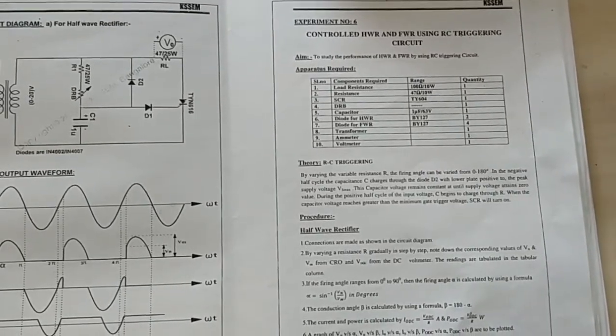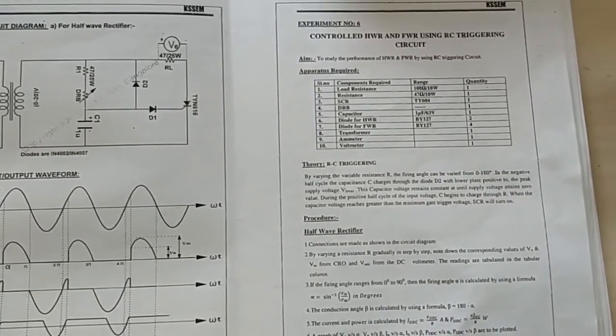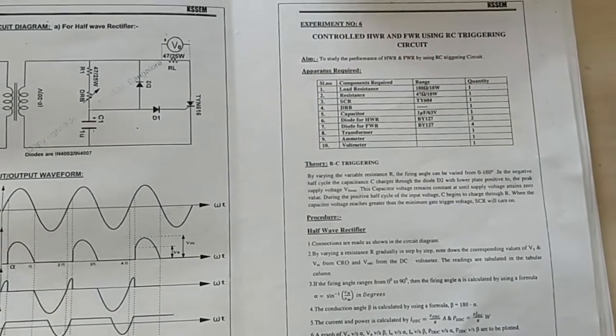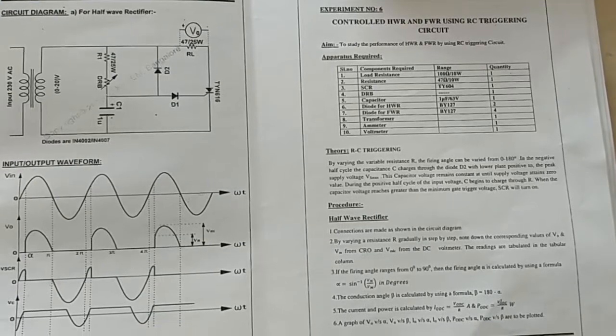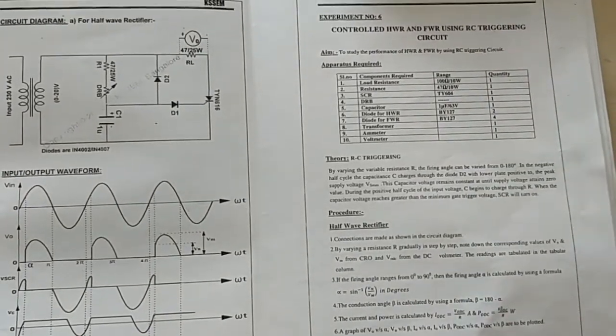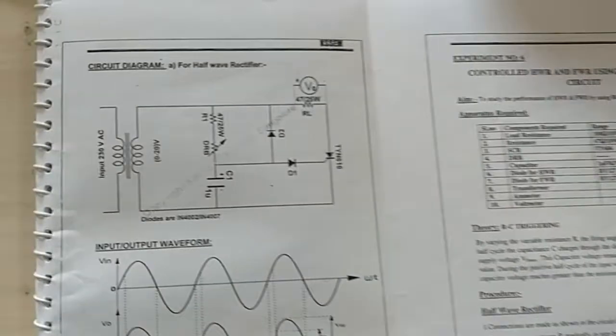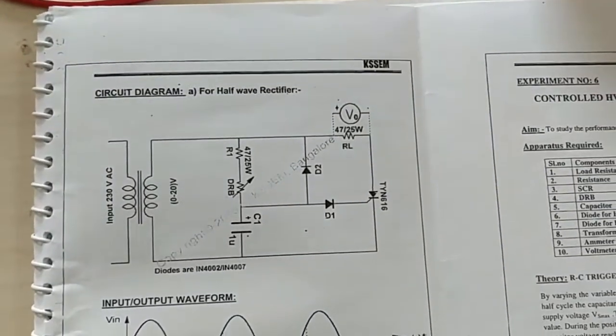Okay, hi everyone. We are doing experiment number six: controlled half wave and full wave rectifier using RC triggering circuit. Basically, we will be triggering the entire circuit through firing angle alpha with a resistor load. This is the circuit.